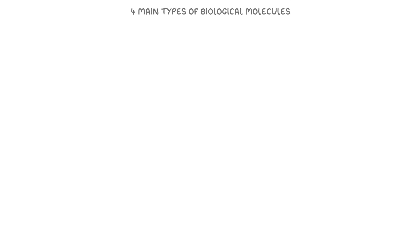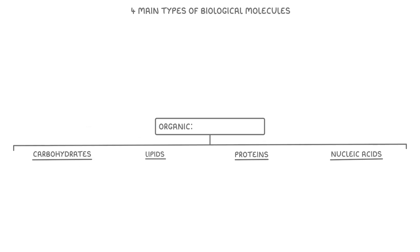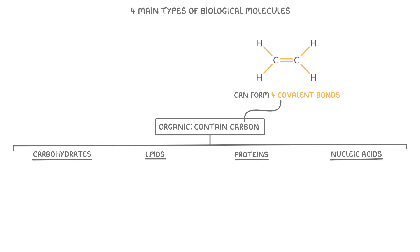Let's start by looking at the four main types of biological molecules. These are carbohydrates, lipids, proteins and nucleic acids. These molecules are all classed as organic, which just means that they contain carbon. One of the special things about carbon is that it can form four covalent bonds, either with other carbon atoms or with different elements. These bonds can be either single bonds or double bonds, giving carbon the flexibility to form a wide variety of complex structures.